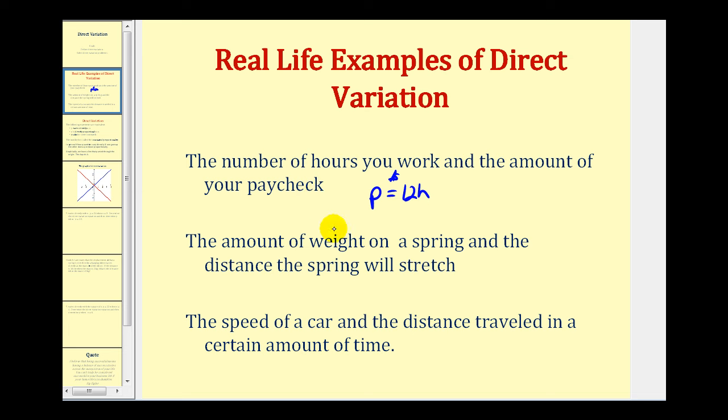Another example, the amount of weight on a spring and the distance the spring will stretch is an example of direct variation. So for example, if we say a spring stretches three inches for every pound attached to it, we would say the distance the spring is stretched, D, is equal to three inches times the number of pounds, P. Again, for every pound, the spring will stretch another three inches, an example of direct variation.